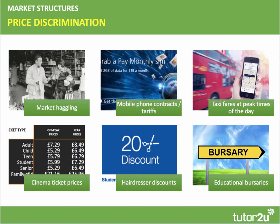Third degree discrimination is where you split the market into clearly separate groups, charging different prices depending on a particular market segment — it could be age, income, or time of use. Crucially, it's the elasticity of demand for different groups that matters. Cinemas are masters of the art, charging off-peak and peak prices and different prices for the same film for an adult, a child, a senior citizen, or a family group discount.